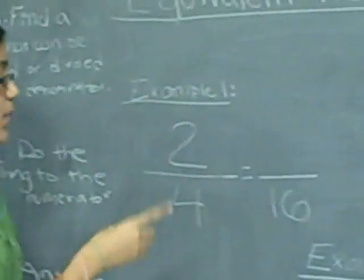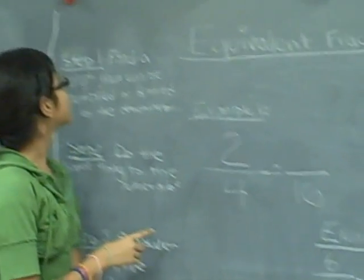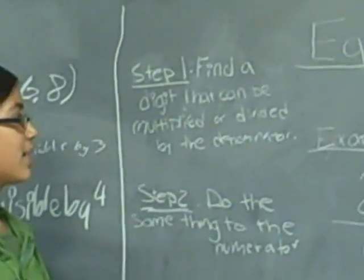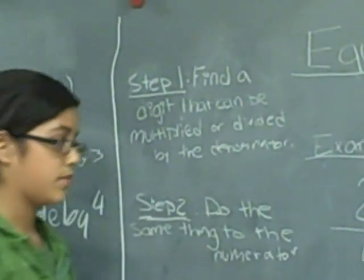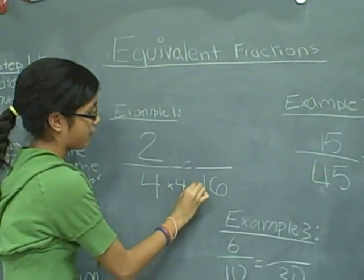For example one, we have two fourths equals something over sixteenths. Step number one is you have to find a digit that can be multiplied or divided by the denominator. So what we do here is multiply it by four, which equals sixteenths.